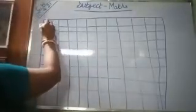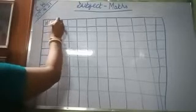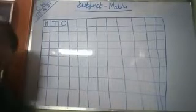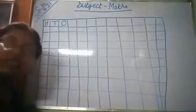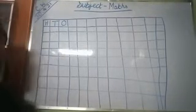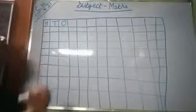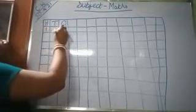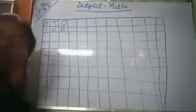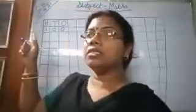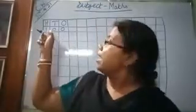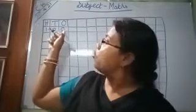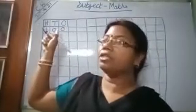Here it is H. Here it is T. Here it is O. The number is 100. H is for hundreds, T is for tens, and O is for ones. I have already taught you this.